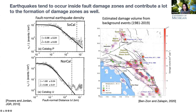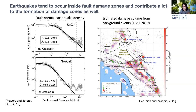Assuming all these earthquakes contribute to damage, Ben-Zion and Zhu have estimated the damage volume from background seismicity in California over almost a 40-year period. The estimated damage volume shows that a lot of damage is generated by small earthquakes as well as large ones. This map also indicates a long along-strike variation of damage inside the fault damage zones, meaning this damage structure is definitely not coherent over very long distances along strike.